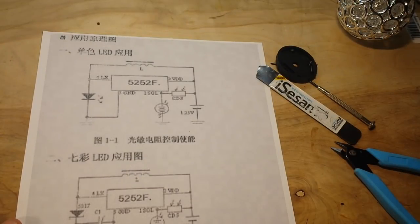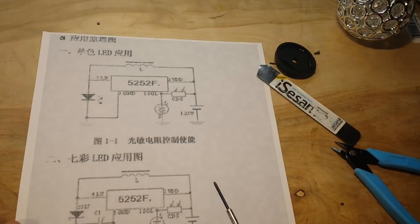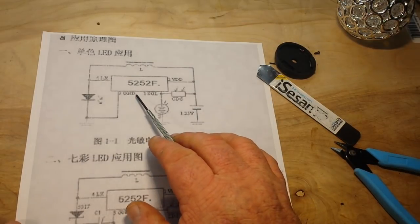Okay. The chip is called a 5252F. And it's an LED driver chip. I couldn't really find too much info on it. But if we take a look here.